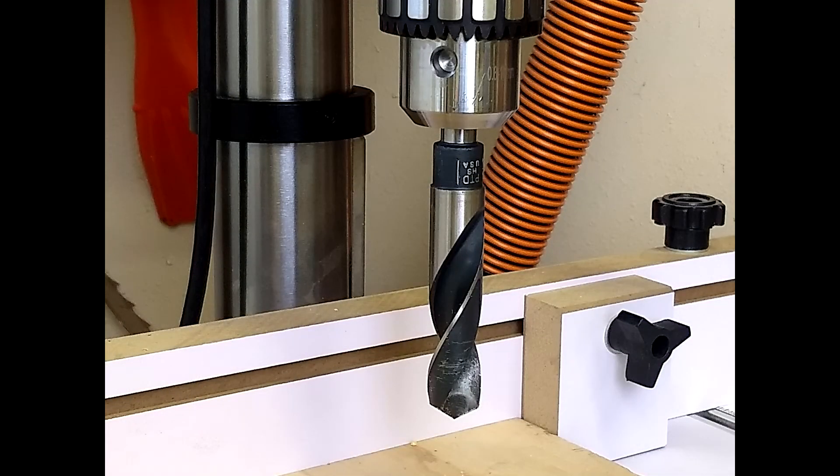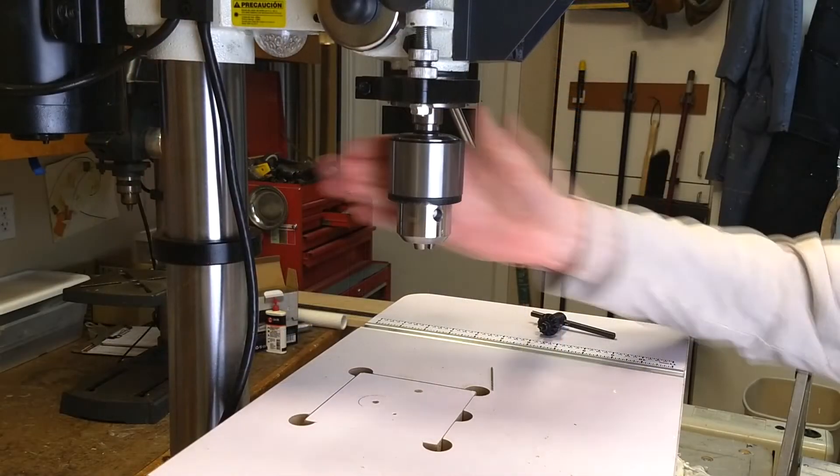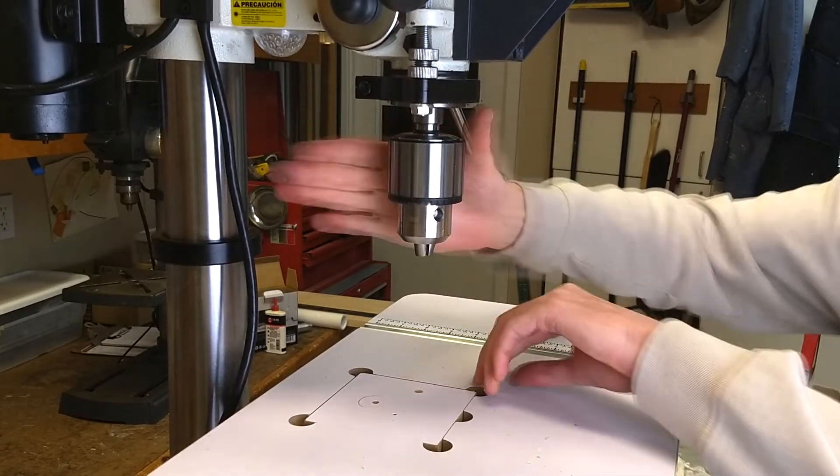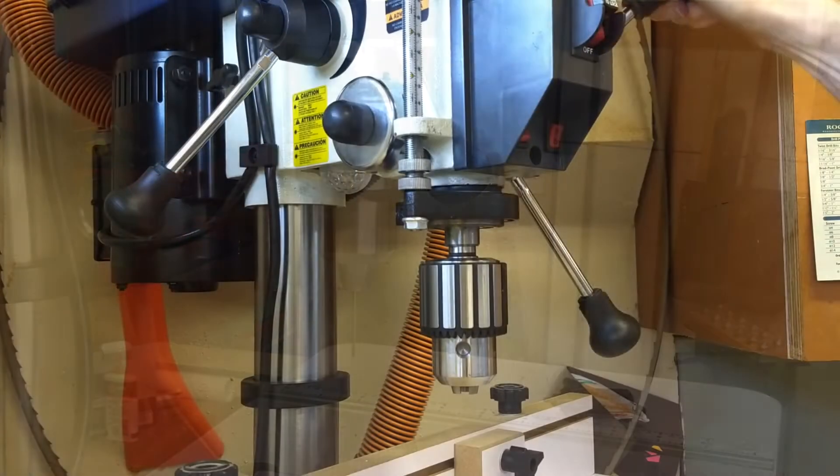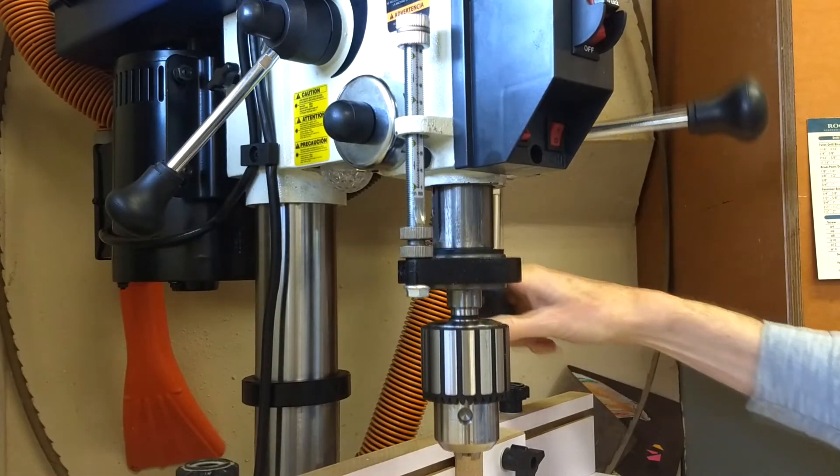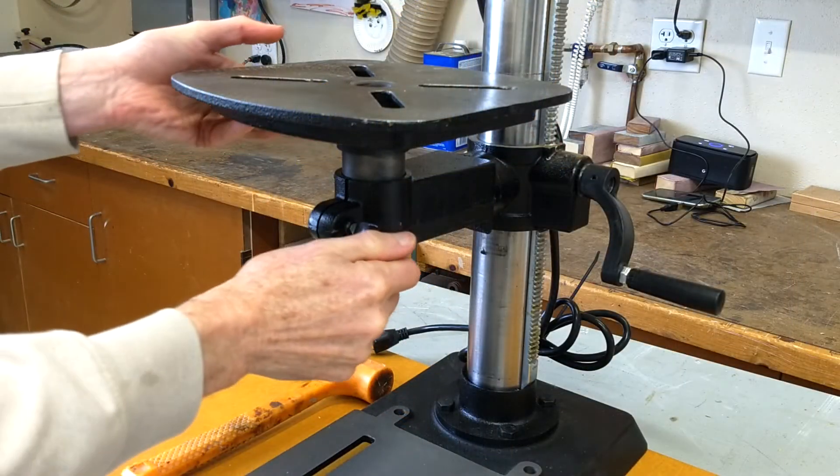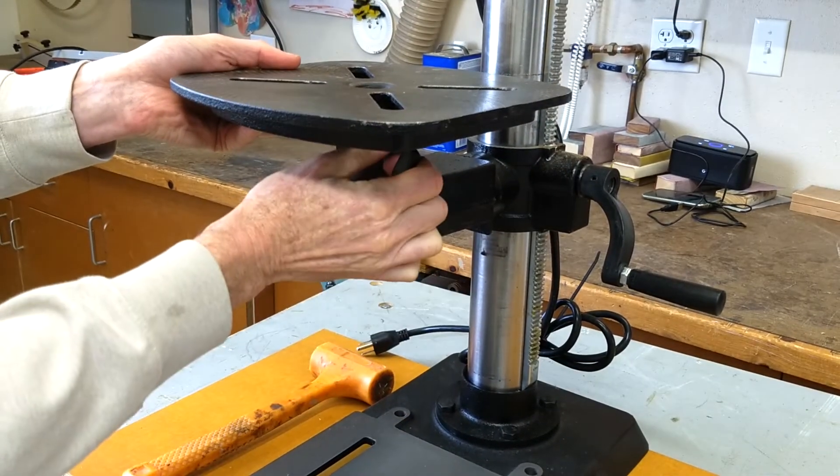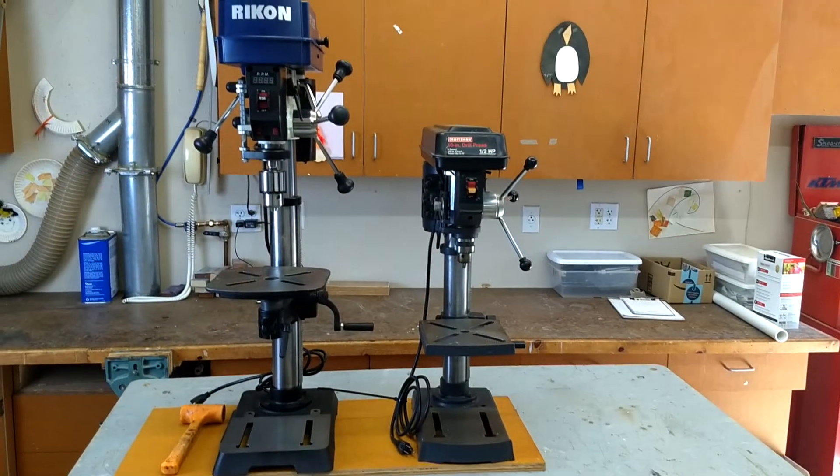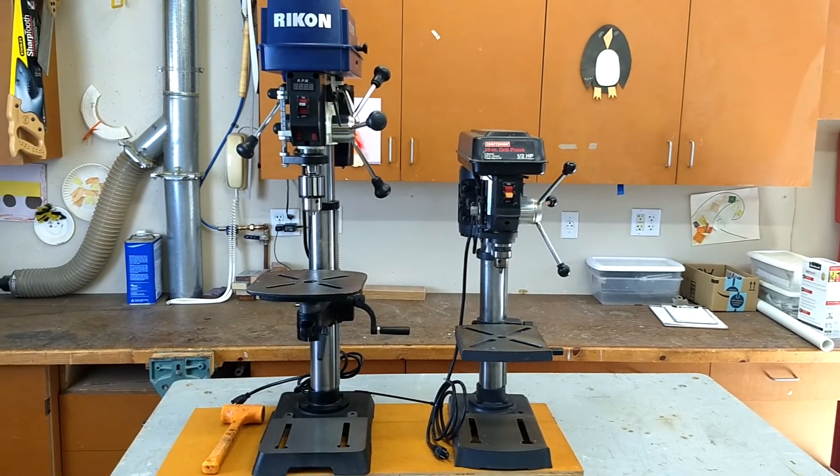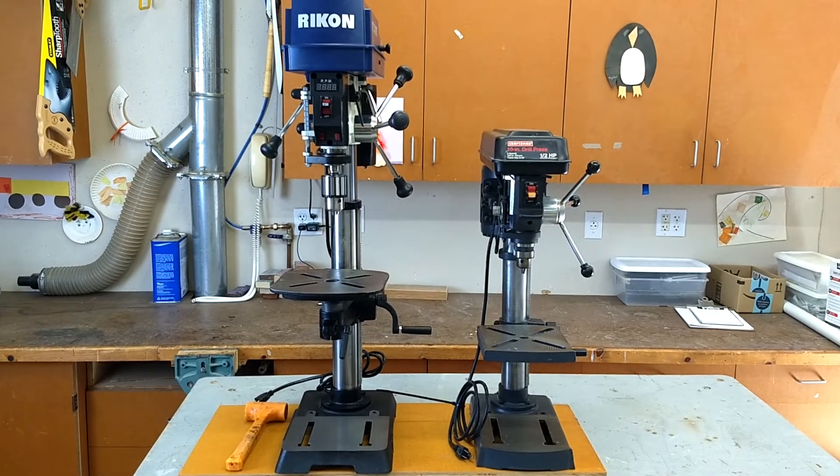A couple other things worth noting. The chuck is a 5/8 inch capacity, but it still necks down nicely and has no issues holding onto a bit as small as a 1/16th. And the quill has over 3 inches of spindle travel. The table rotates left or right 360 degrees, but it does not tilt forward or aft. It is big for a benchtop press with a height of over 3 feet, and it weighs in at over 100 pounds.